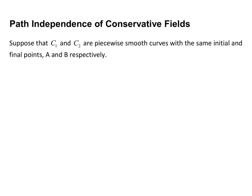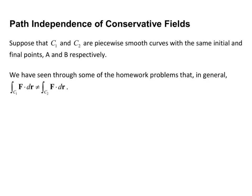Now we need to talk about path independence of conservative fields. Suppose that curves C1 and C2 are piecewise smooth curves with the same initial and final points A and B respectively. We've seen through some homework problems that in general the line integral over C1 of F dot dr is not equal to the line integral over C2 of F dot dr — even with the same starting and ending point, different paths give different line integrals.